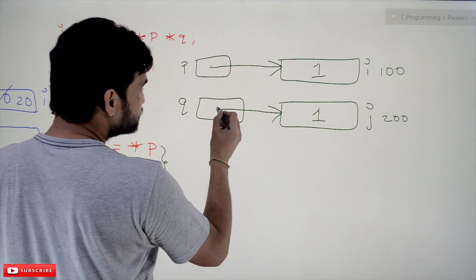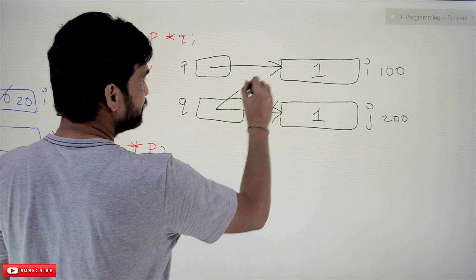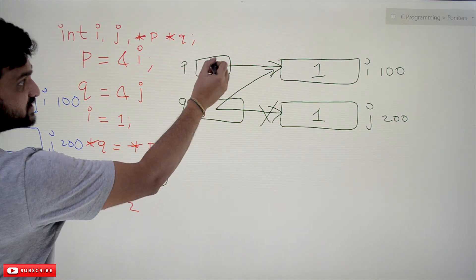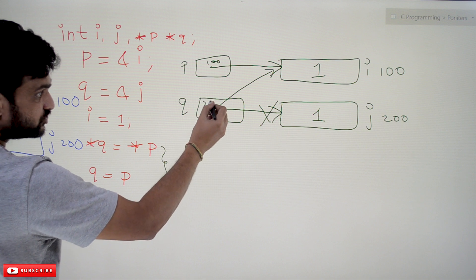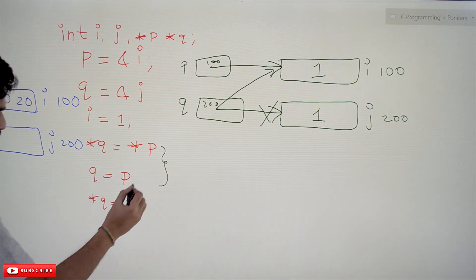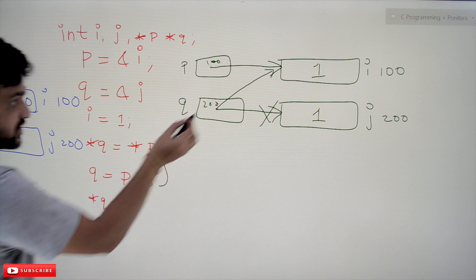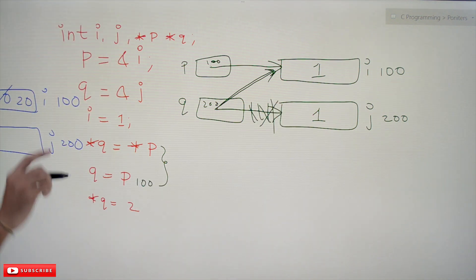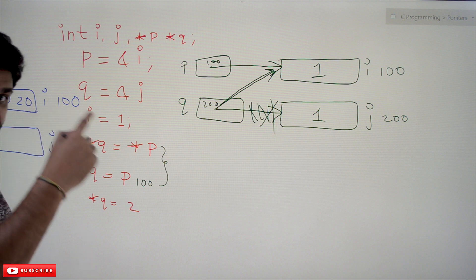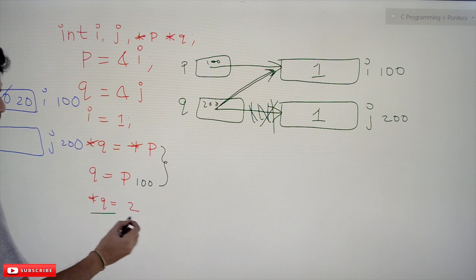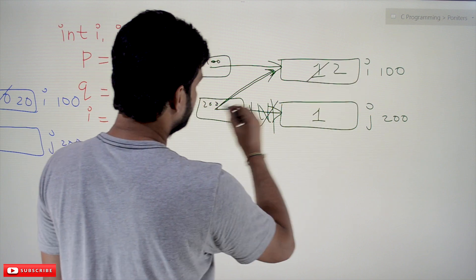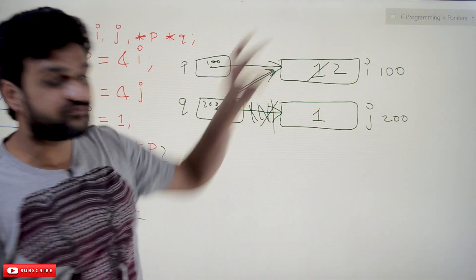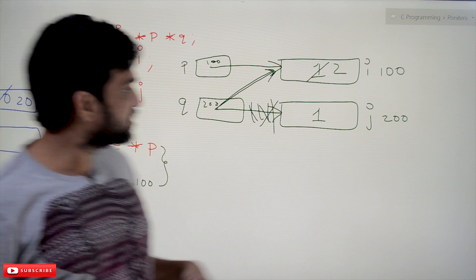q = p means q will no longer point to memory location 200 — it will now point to memory location 100. The value stored in p is 100, so now q is equal to 100 and q points to i's memory location. Then *q = 2 — since q is now pointing to i's location, that value is overwritten with 2.